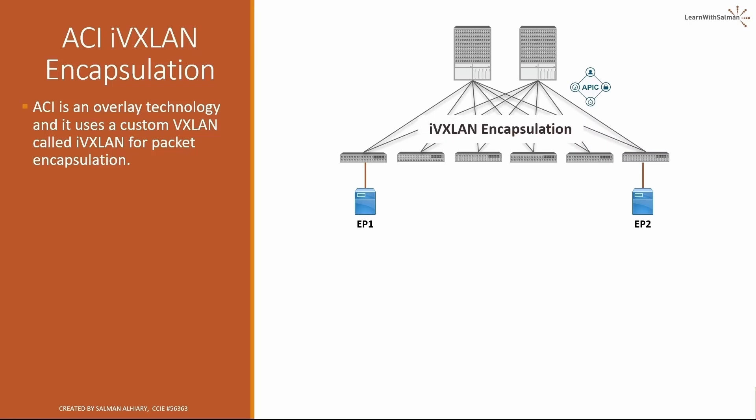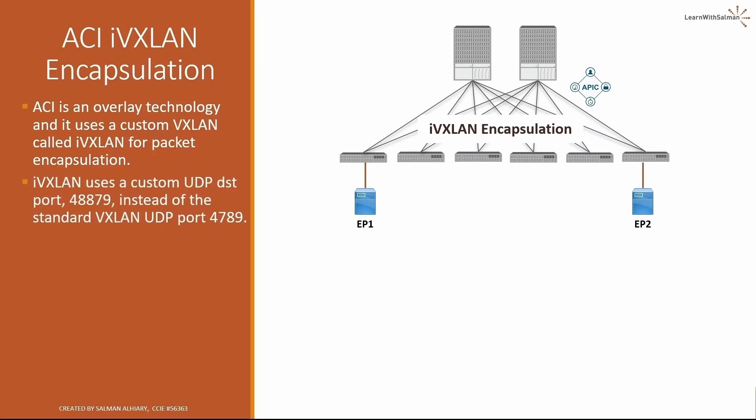The IVXLAN encapsulation within the ACI fabric allows ACI to appear as a single switch to the outside world. ACI relies on the added outer header for forwarding while keeping the original internal header as is. IVXLAN uses a custom UDP destination port 48879 instead of the standard VXLAN UDP port 4789, and uses the VXLAN header reserve bits to apply the PC tag concept for policy enforcement.